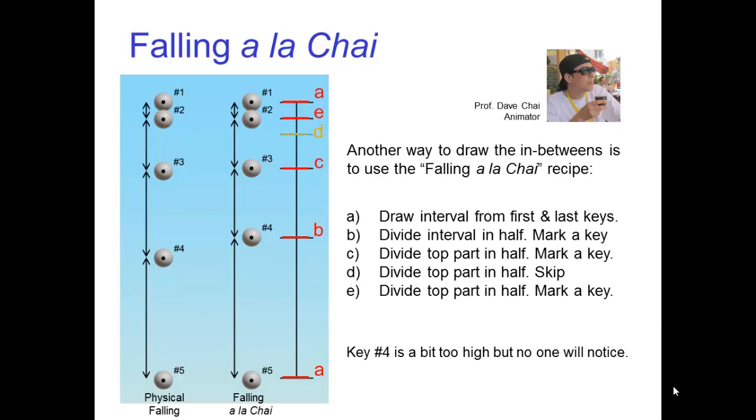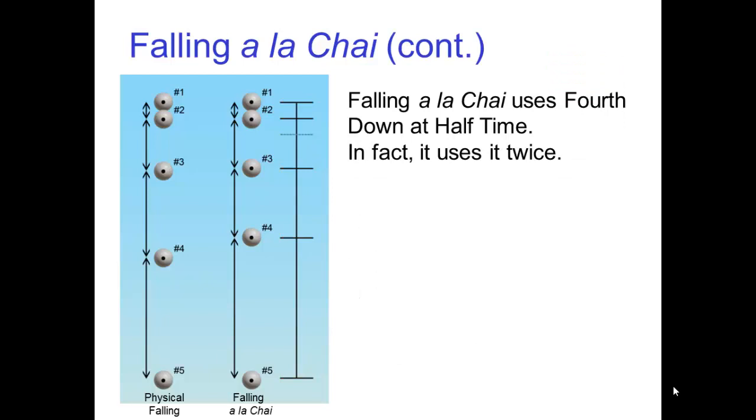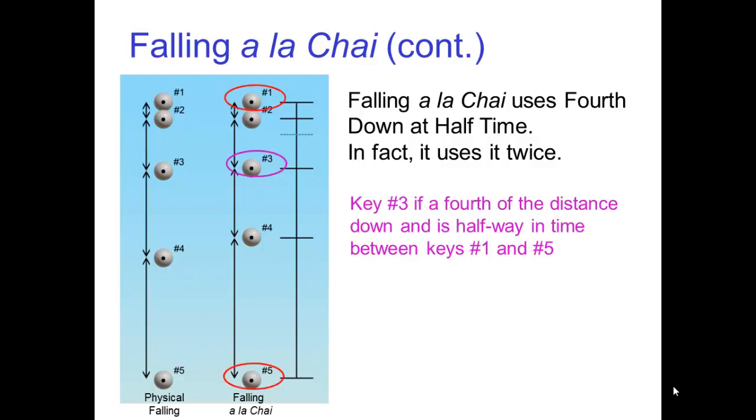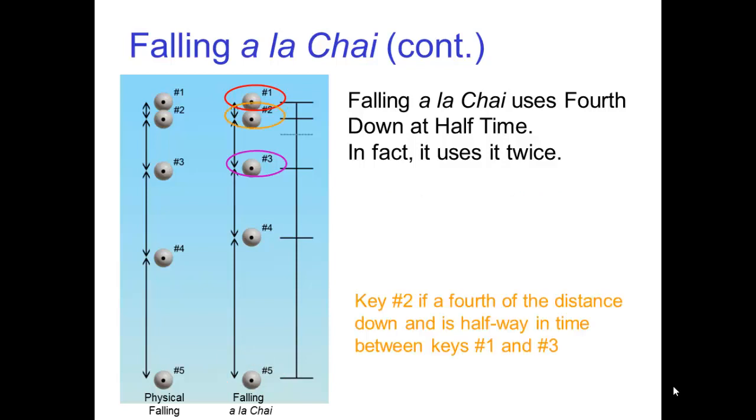The lower in-between is going to be slightly too high, but no one will notice. Now, falling a la chai uses fourth down and half time. In fact, it uses it twice. Key number three is a fourth of the distance down and is halfway in time between keys number one and number five. Key number two is a fourth of the distance down and is halfway in time between keys number one and number three.